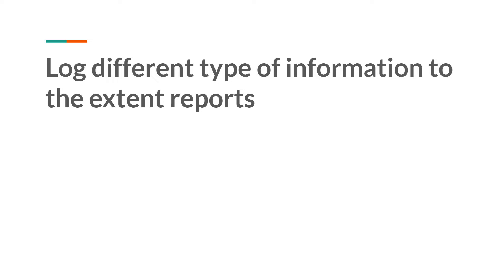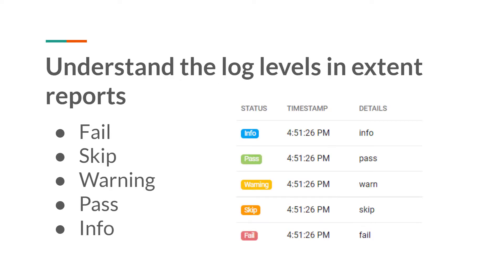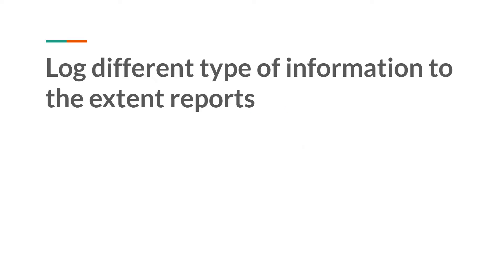In my previous video, we saw how to log information using different log levels. But using all of those log levels, we only logged text type of data. When you are working with automation, there is no guarantee you will always handle text type of data only. Sometimes you may receive XML type data, JSON type data, collection data like a set, list, or map of values.